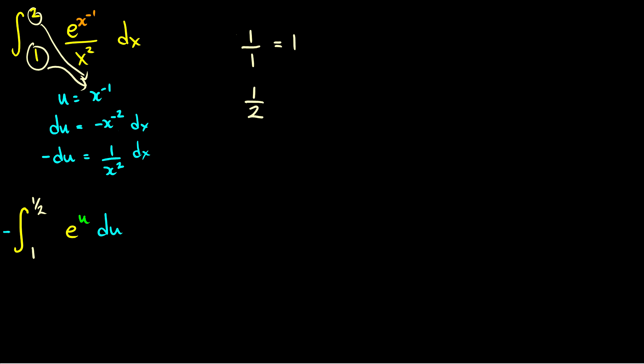But we can flip these because one is greater than one half. So if we flip these, then we get rid of the negative out front, and now we're left with the integral from one half to one of e to the u du.